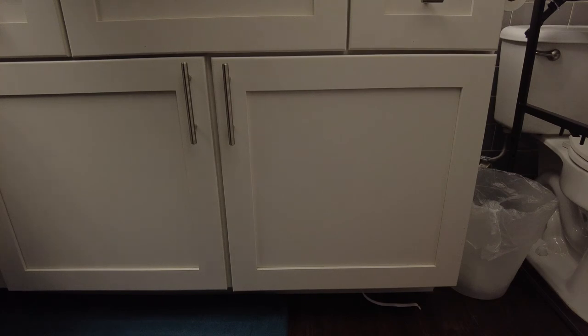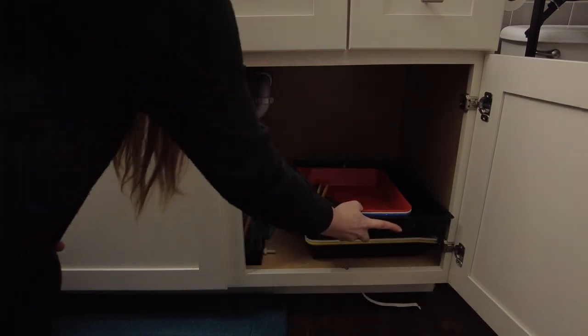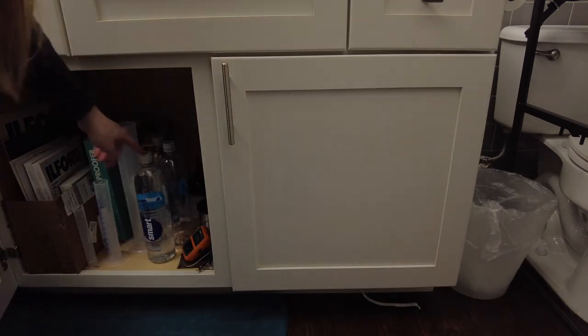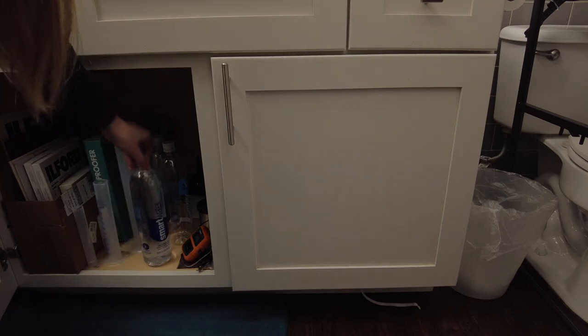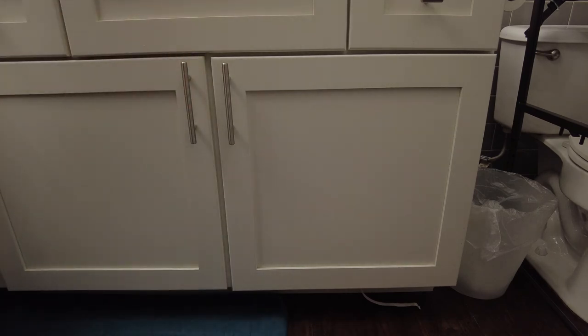When I'm done using the dark room everything gets packed away. Anything that shouldn't get dusty. As well as making sure that all of the chemicals from my trays or from my film are put into a dark spot. If you don't have cabinets that'll work you could get a dark colored bin with a lid and store all of your chemicals and things that need to stay clean inside of that.